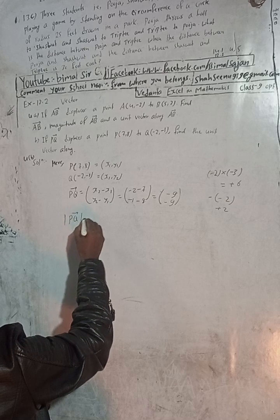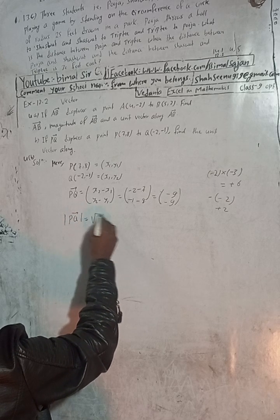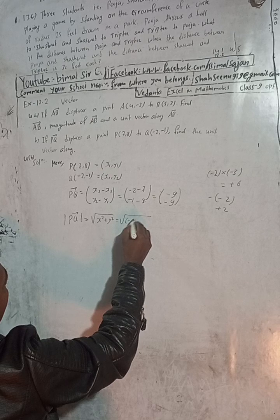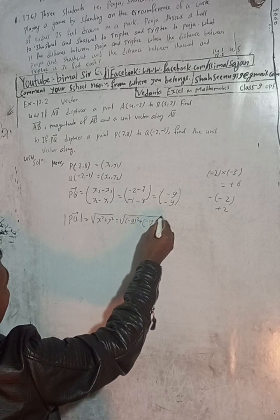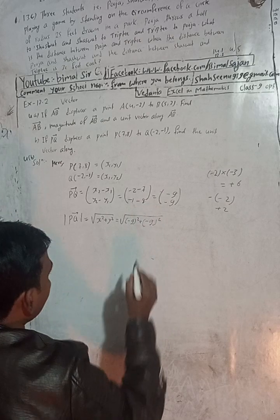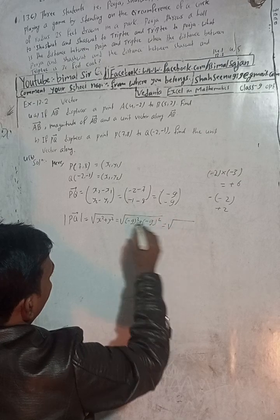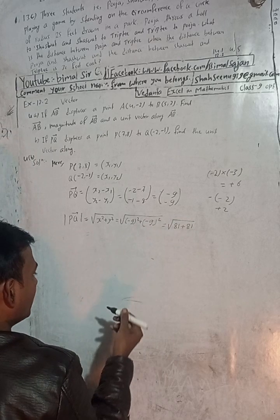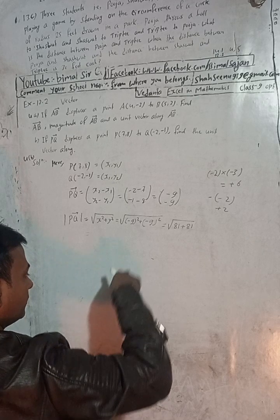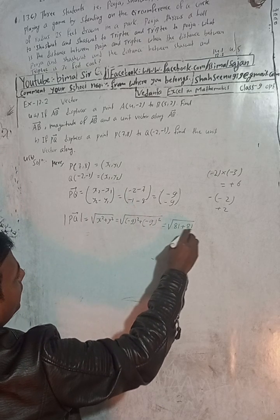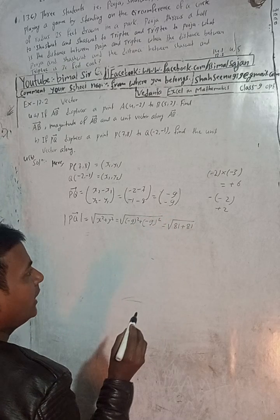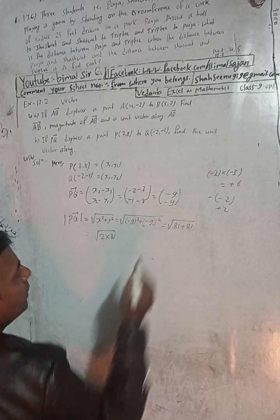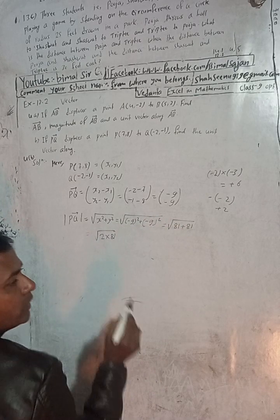The modulus of PQ vector is root under x squared plus y squared, which is root of (-9) squared plus (-9) squared. That is root of 81 plus 81, which equals root of 2 times 81. That gives us 9 root 2.